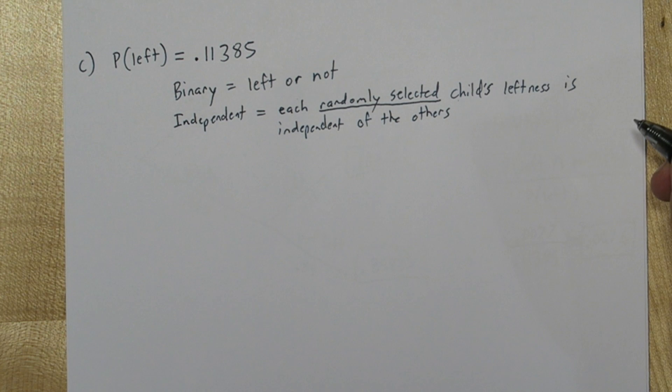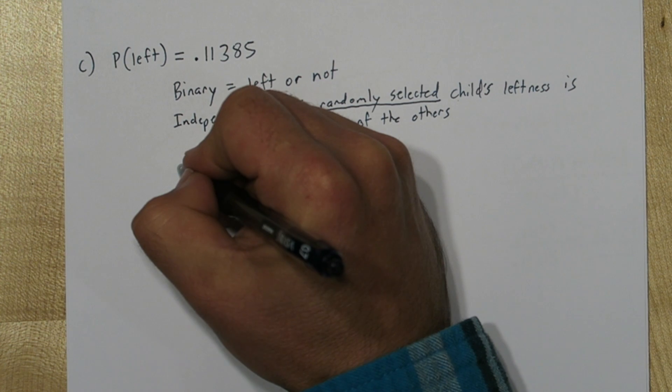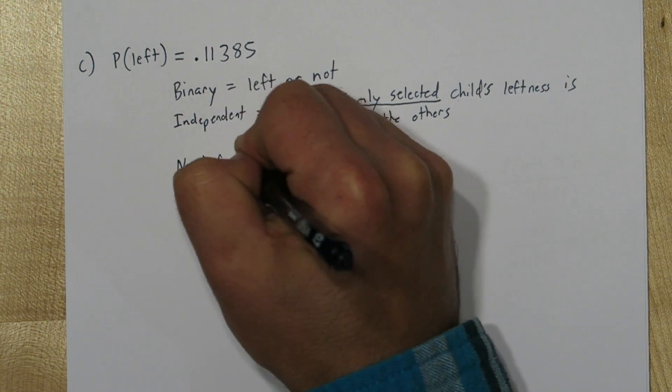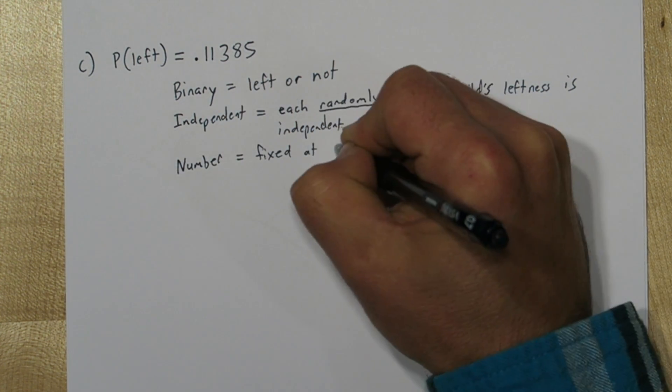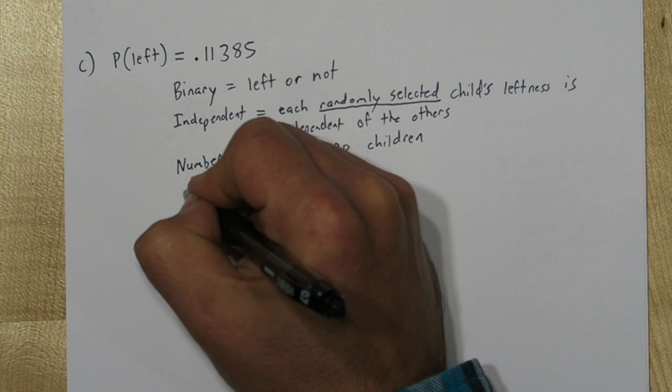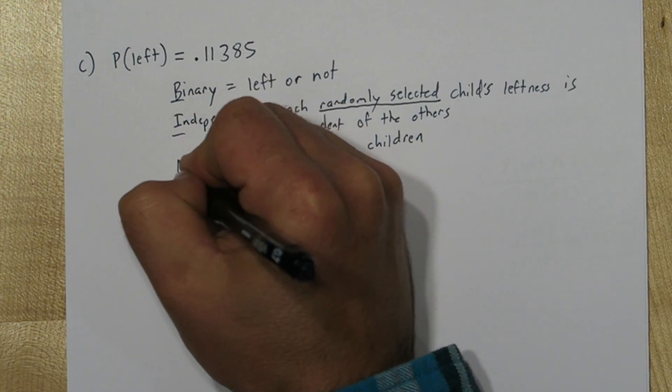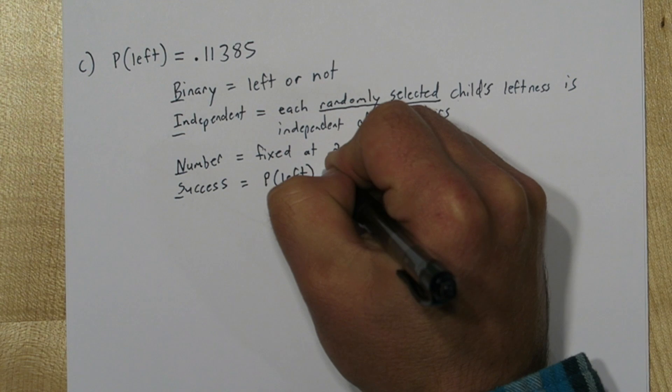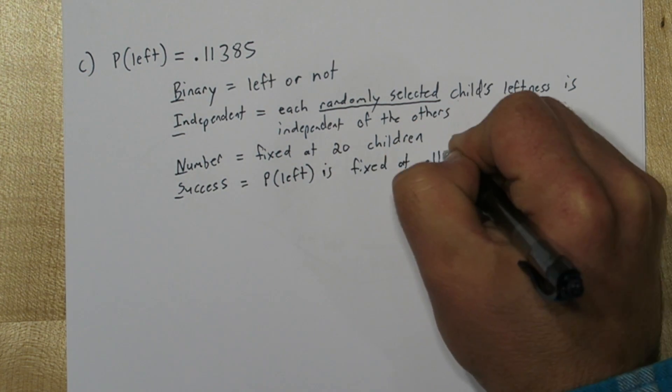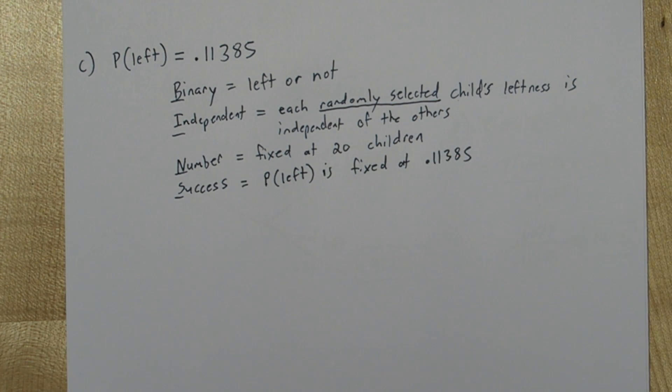Now we're probably sampling without replacement so we should check the 10% condition here too. So we're going to have to assume that there's at least 200 births in this region. Next we need a fixed number of trials. They're selecting exactly 20 children so that's a fixed number. And then the probability of success has to be the same for each trial. And in this case the probability of left is fixed at 0.11385.